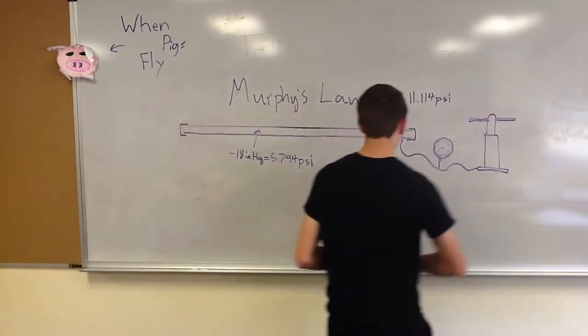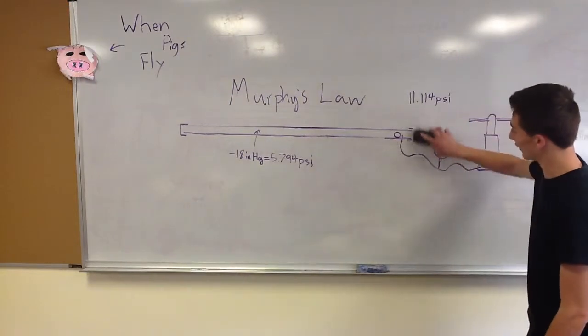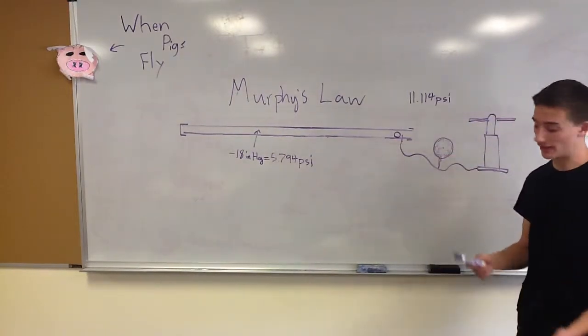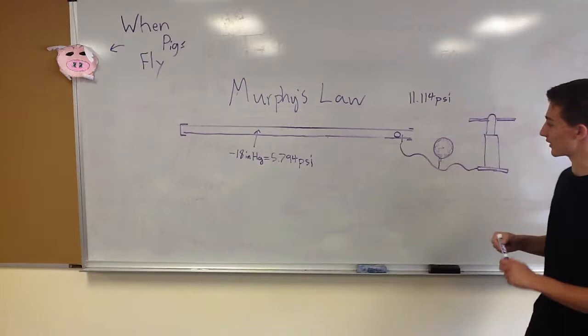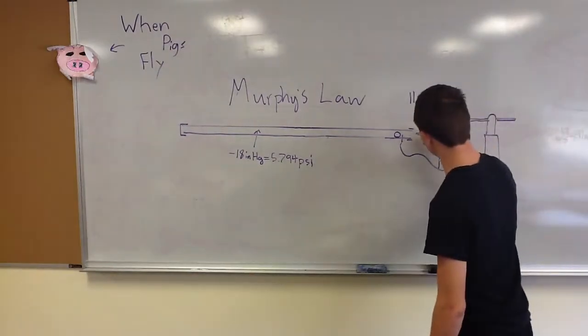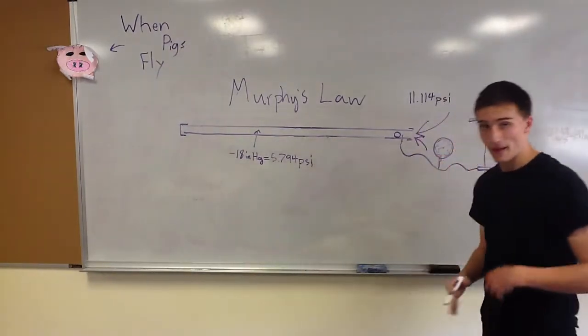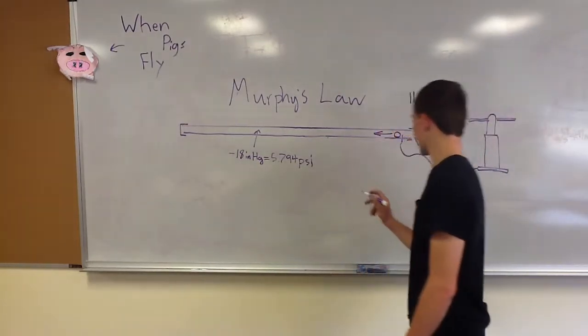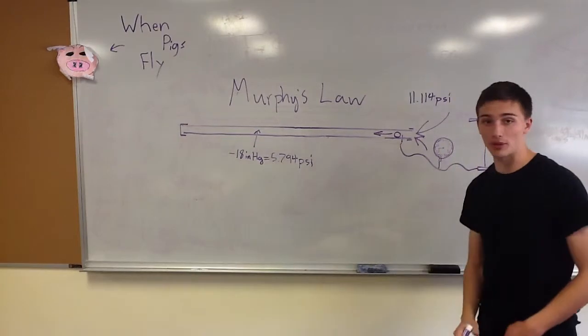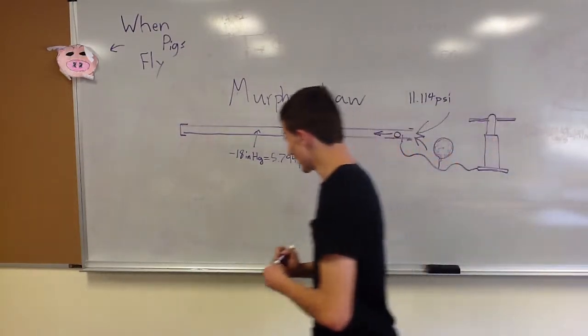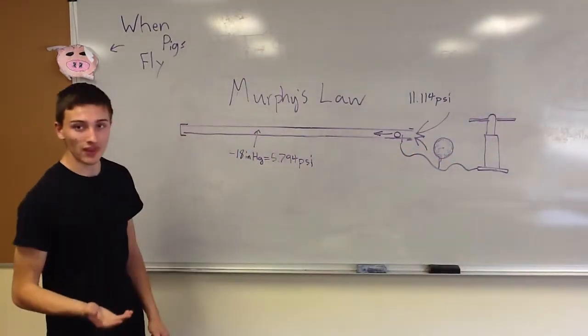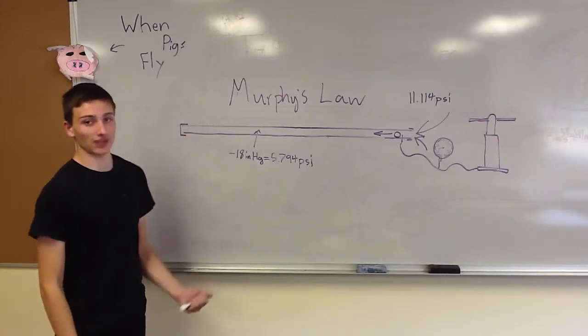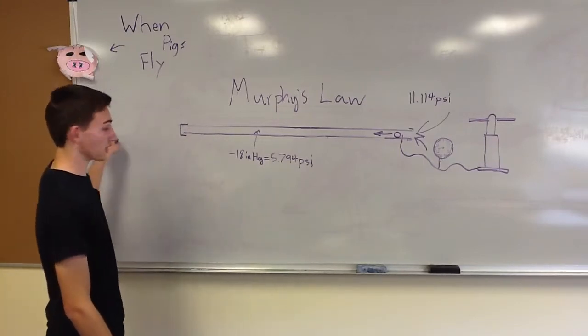And what that does is it causes a high vacuum on the inside. And so what we do to fire it is we remove one area of the chamber by just poking a hole in it, which allows all of the air to rush in from the outside to the inside, which allows the ping-pong ball to be projected forward going at roughly the same speed as the air.